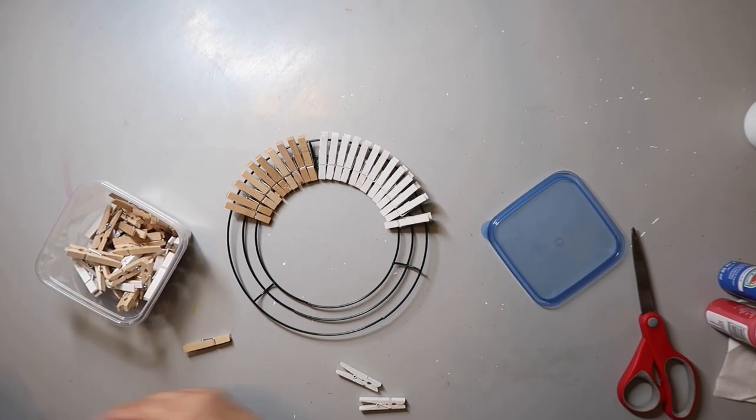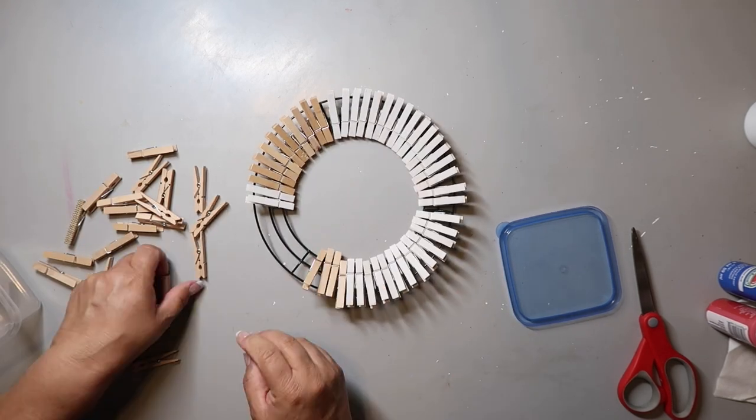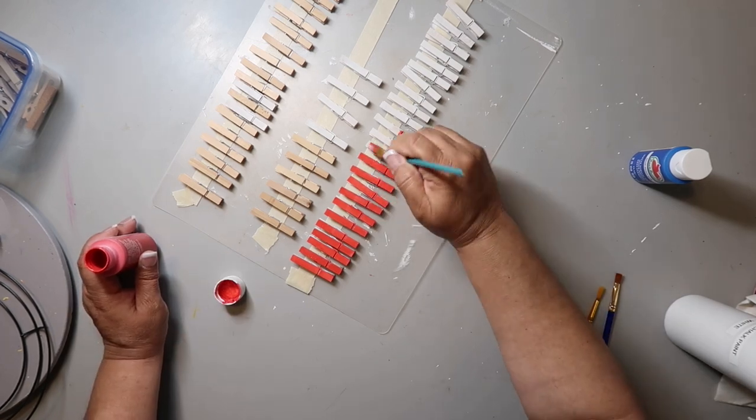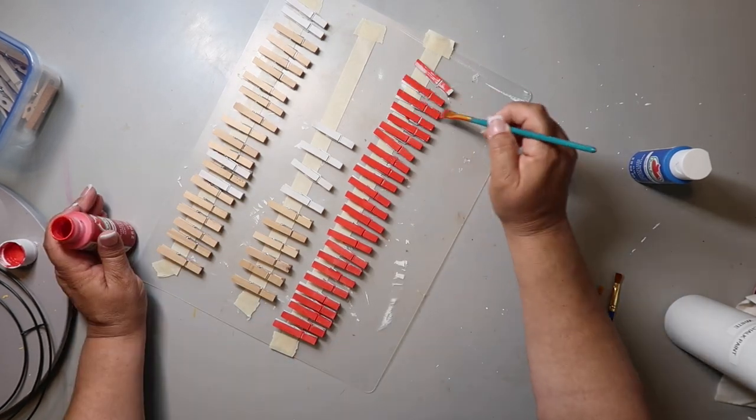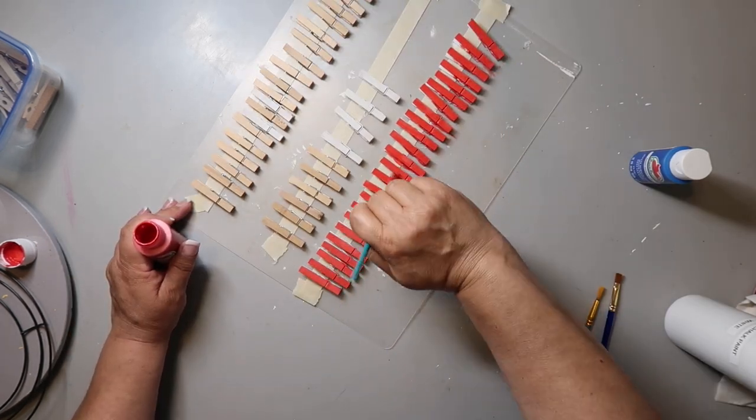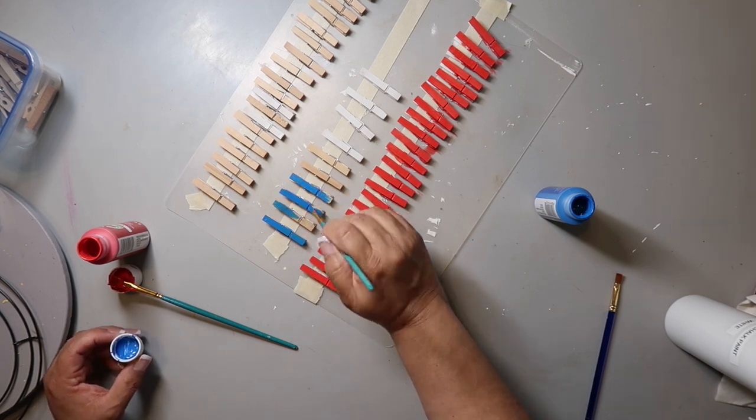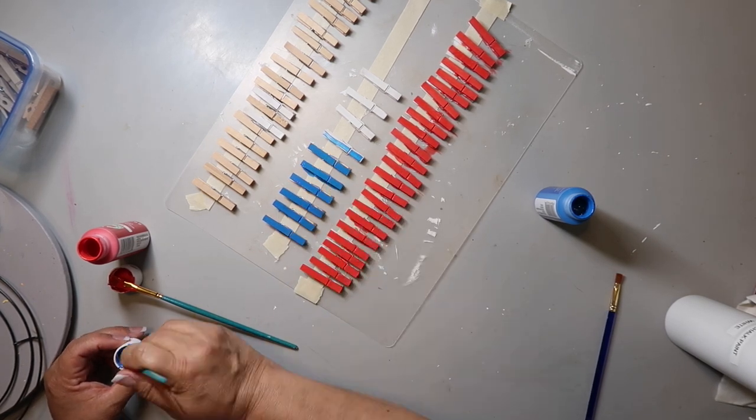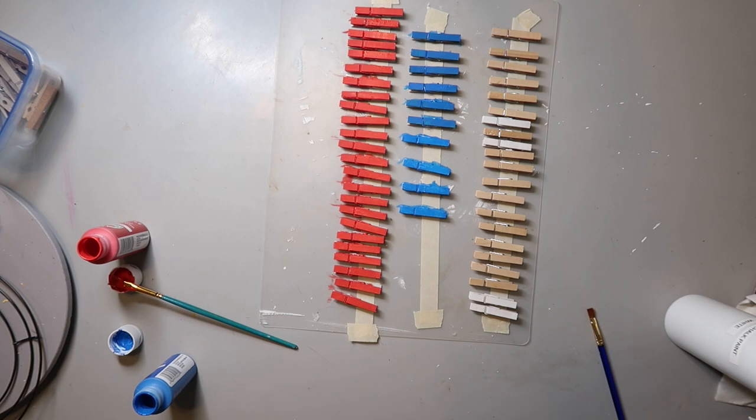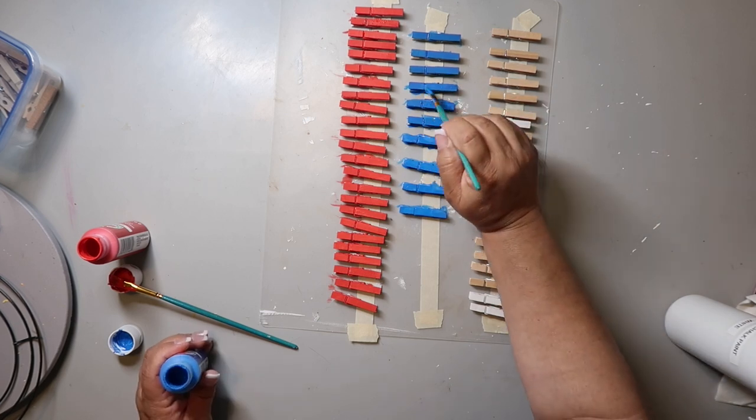Last project, DIY number five. I took this wreath form from Dollar Tree and I'm counting out how many of these clothespins I'm going to need. As you can see, some of them are already painted white. So I'm painting 24 of them with the flag red color, and then I'm going to paint 21 of them white. And I think I painted nine or ten, not exactly sure, with that bright blue color. That's going to make my little flag design. I'm just going to be painting.